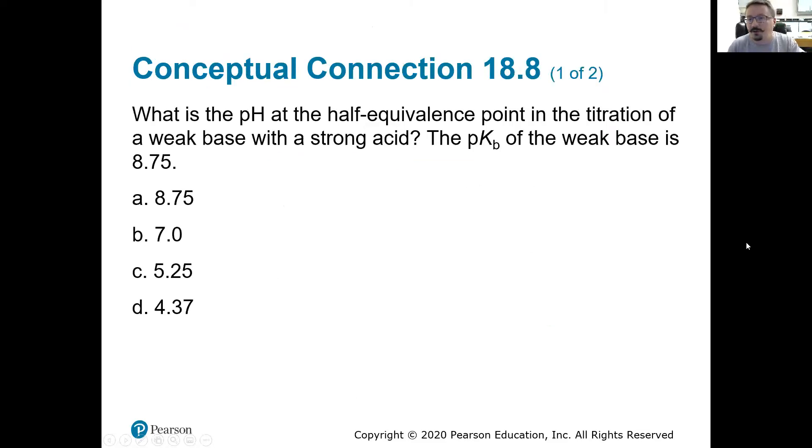So conceptual question, what's the pH at the half equivalence point in the titration of a weak base with a strong acid? So just what we saw there. And we know the pKb of the weak base is 8.75. So we're at the half equivalence point. So we're not to the equivalence point yet. So we have a buffer, and we had a weak base. Our pKb was 8.75. We're going to use the Henderson-Hasselbalch equation, which is pKa plus the log of the conjugate base over the acid.